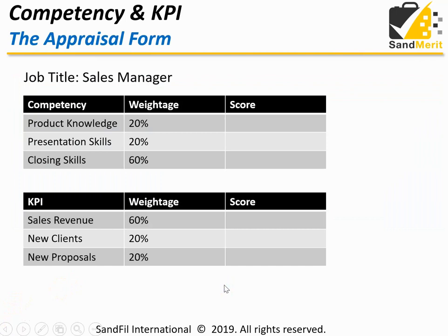Now let's look at the sample appraisal form. For a sales manager, the sample competency items can be product knowledge, presentation skill, and closing skill. The weightage is very important to indicate the importance of that particular competency. In this case, closing skill is far more important than presentation skill and product knowledge, because you need the sales manager to be competent to help the team close the deal.